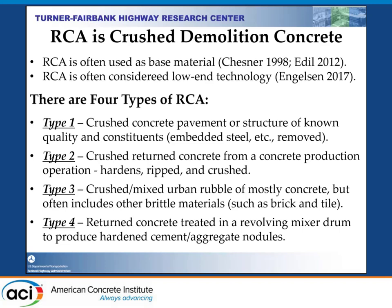There are four types of RCA. Type one is crushed concrete pavements or structures of known quality; it may have steel or other material that can be removed during processing. Type two is crushed returning concrete from a concrete production operation that hardens and is crushed. Type three is crushed mixed urban rubble, mostly concrete but often including other brittle materials such as brick and tile. Type four is returned concrete treated in a revolving mix drum to produce hardened cement nodules.